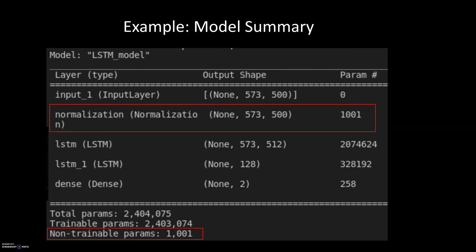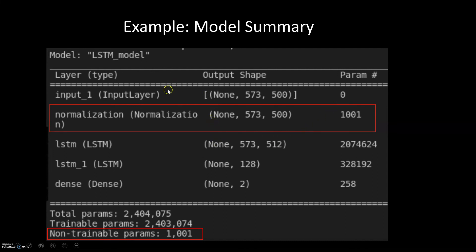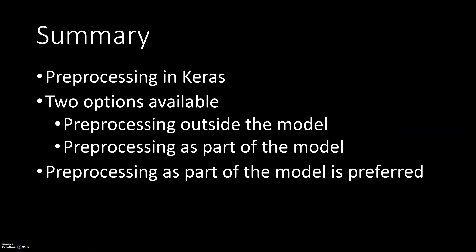The second thing to pay attention to is the parameter counts. We have a large total number of parameters, some of which are trainable parameters belonging to our neural network layers such as LSTM and Dense layers. However, for the normalization layer we have non-trainable parameters, because we don't train those — they are learned via adapt(). I'll create another video explaining how those numbers are calculated, but the key point here is that the model summary shows the normalization layer alongside the other layers.